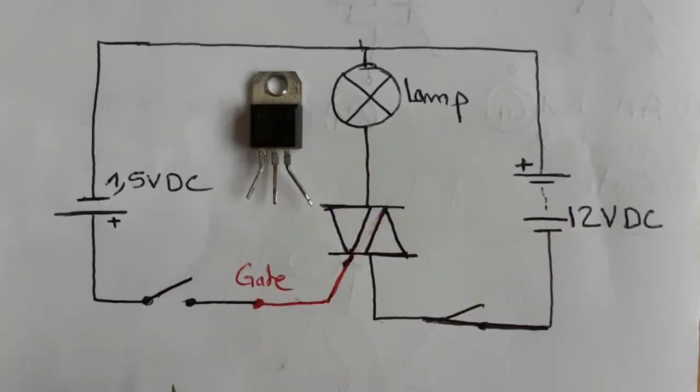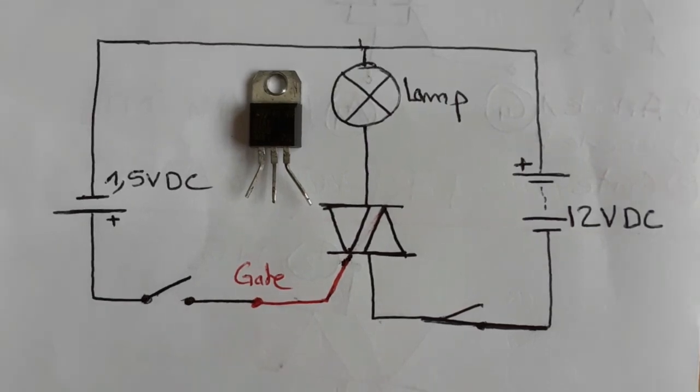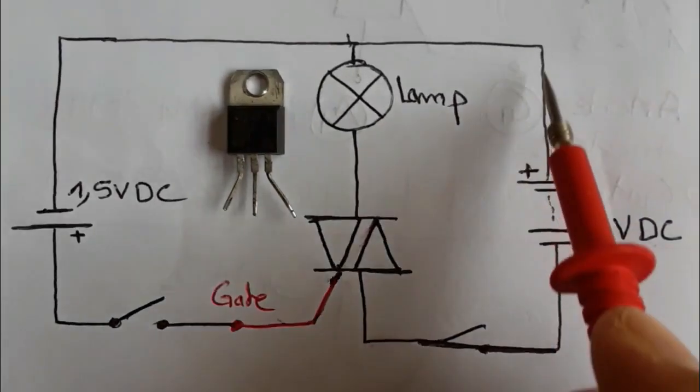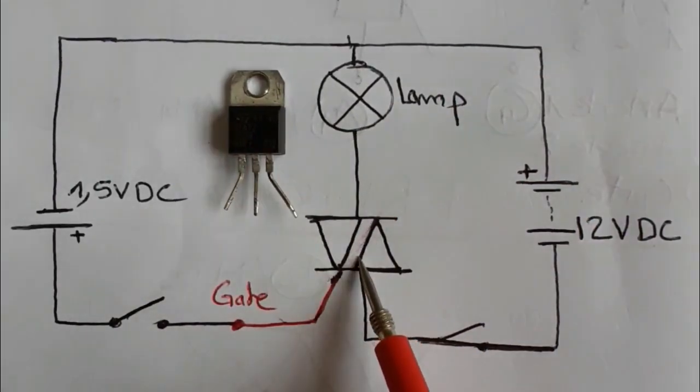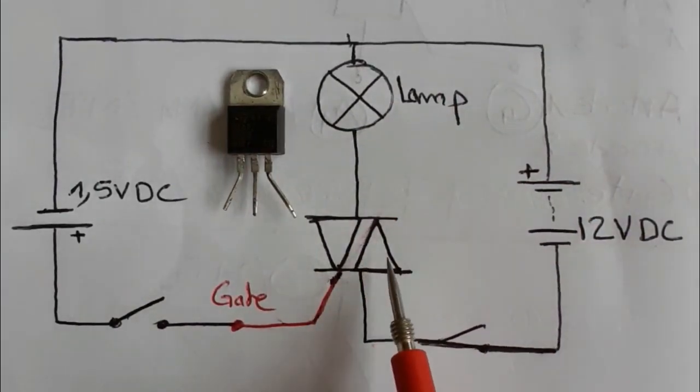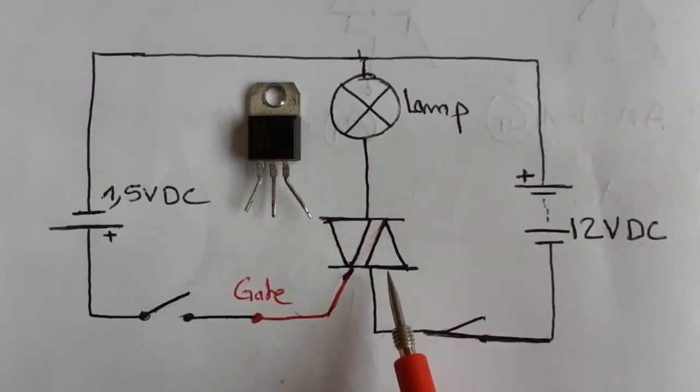You know why? Because the TRIAC is not activated. So, the current, as you can see, is not passed through the TRIAC because the TRIAC is not activated. So, that's why the lamp is off.